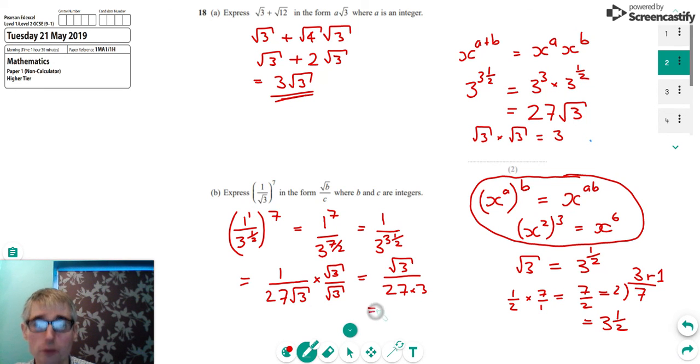And we're nearly there, just one step away. We've got root 3 on the top. And we've just got to times 27 by 3, which is 81. And we've done it. That's in the form that we're required. So it's root B over C, where in this case, B is 3 and C is 81.